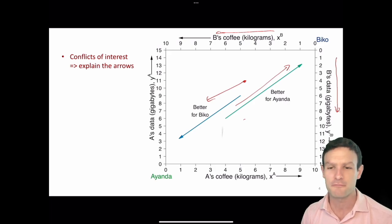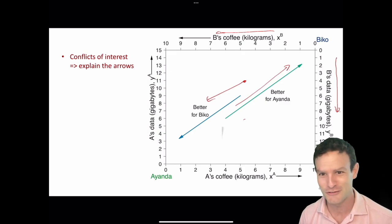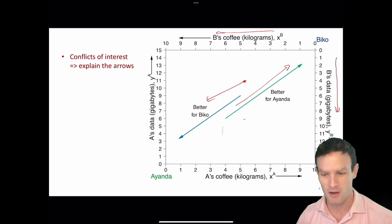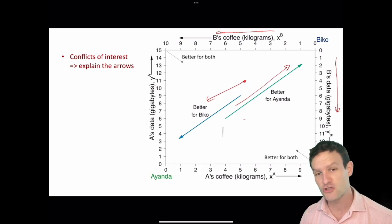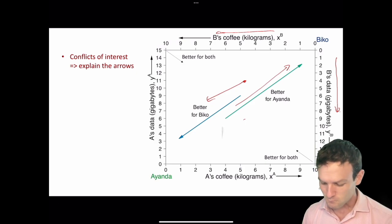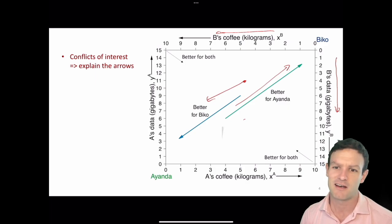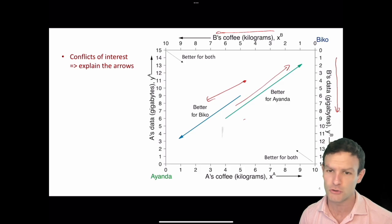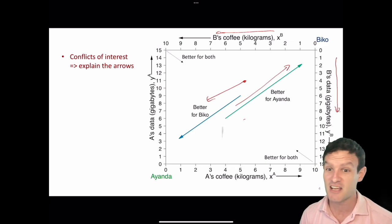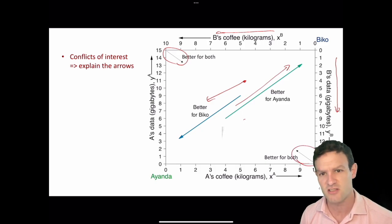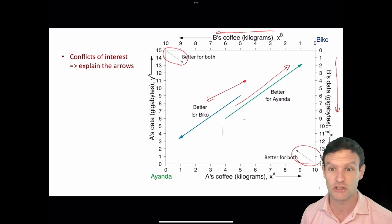There are conflicts of interest between the two of them — they both like to have more of the goods, so they conflict over who gets more within the box. However, there are certain directions that are actually better for both of them. Because both people have diminishing marginal utility, they're willing to make trade-offs between the two goods, and they can engage in exchange so that they both do better. Those arrows in the corners suggest opportunities for them both to gain by exchanging goods.